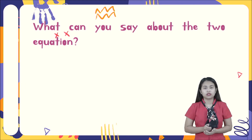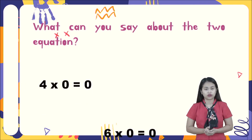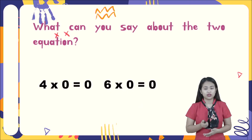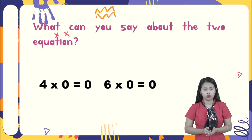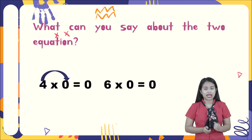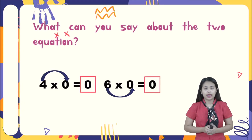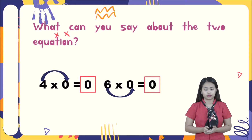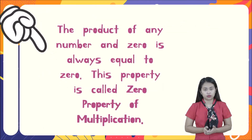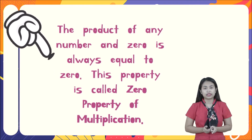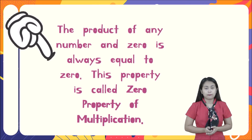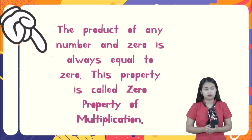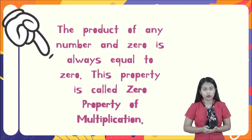What can you say about the two equations — four times zero equals zero, and six times zero equals zero? The product of any number and zero is always zero. Four times zero is multiplied by zero, so definitely the answer is zero. Any number multiplied by zero gives a product of always zero. This property is called the zero property of multiplication.